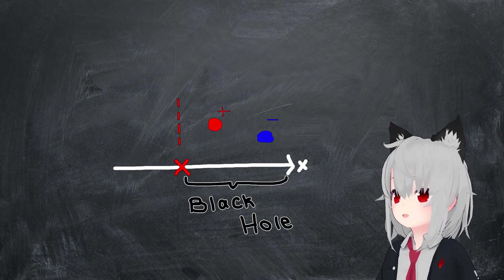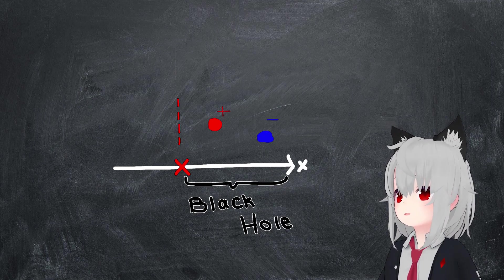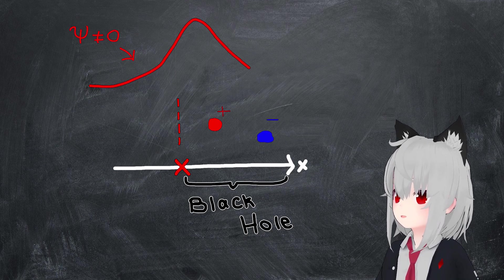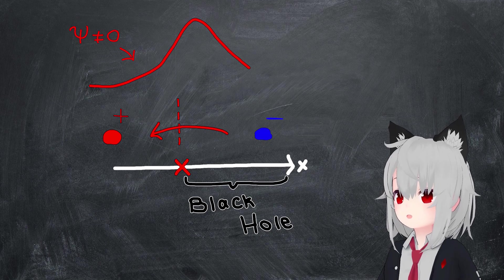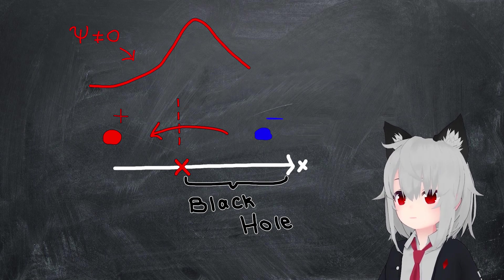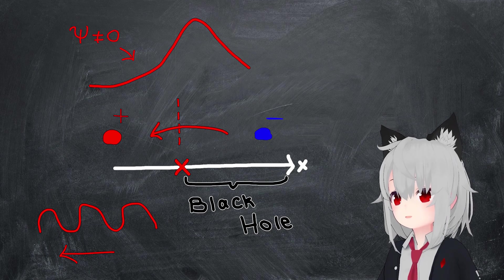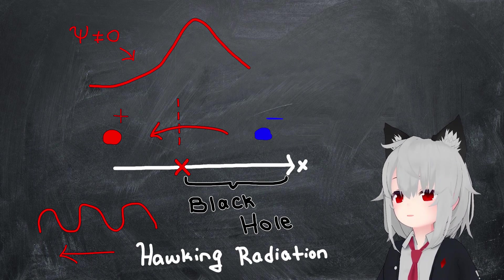Although classically these particle-antiparticle pairs wouldn't be able to escape the black hole, a quantum tunneling process can, in principle, kick one of the particles out over the event horizon before it's able to annihilate with its partner. This would give rise to a sea of emitted particles, ultimately comprising Hawking radiation.